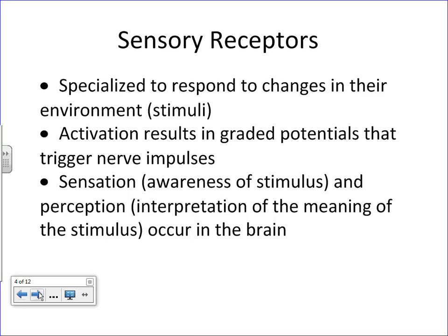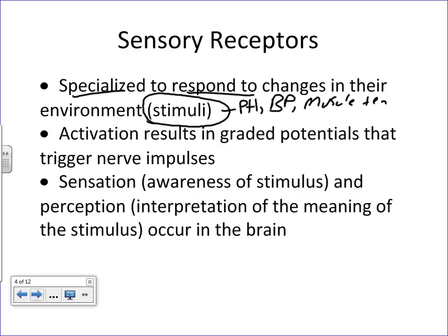Sensory receptors are structures found throughout the body that are specialized to respond to changes in the environment. Those changes in the environment are what we call stimuli. We could list various modalities of stimuli: changes in blood chemistry and pH, changes in blood pressure, changes in muscle tension, changes in overall body position, changes in temperature, and so on.